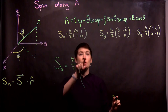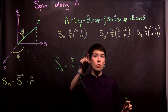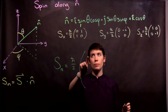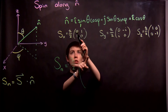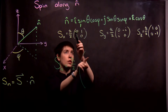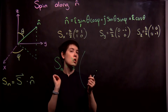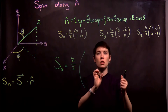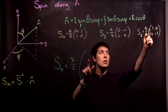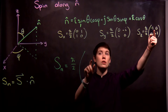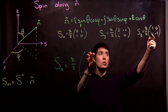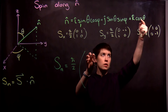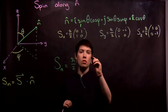Now I want to first consider the upper-left term. Notice this has a zero here, so nothing will contribute. This has a zero here, so nothing will contribute. This has a one, so what goes in this upper corner is one times cosine theta.